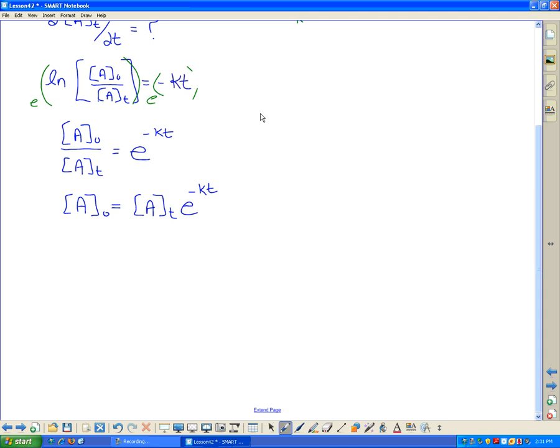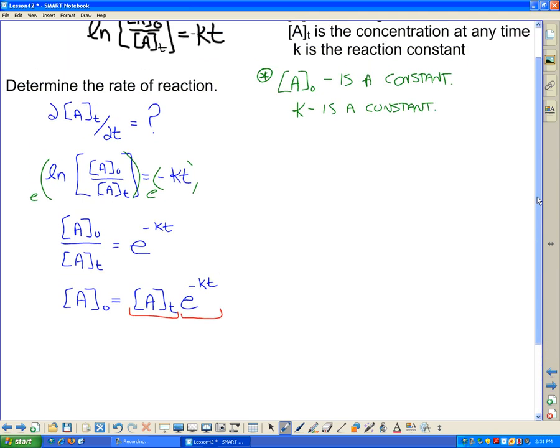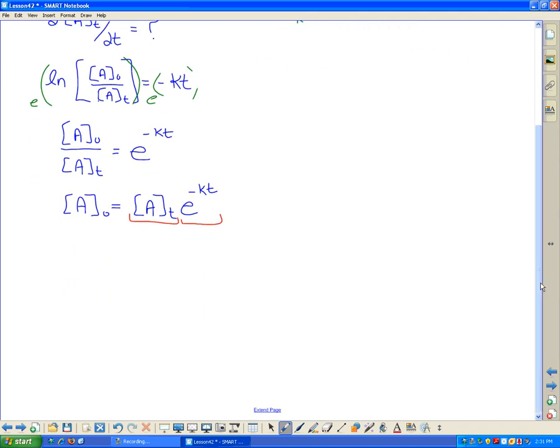I'm going to take the derivative, and I'm going to note that these are two variables over here, or two functions, I should say. Remember that A naught is a constant from up here. So we take the derivative of a constant.